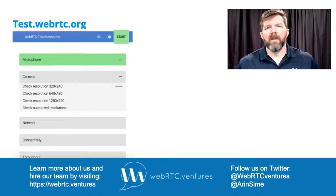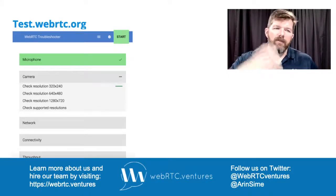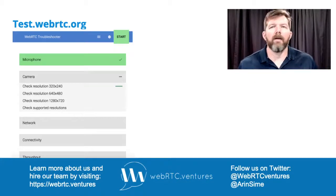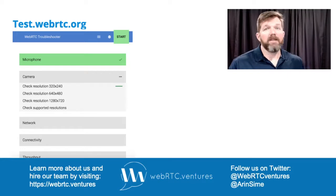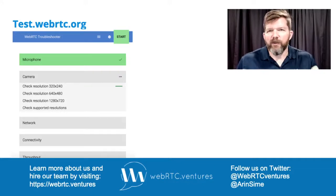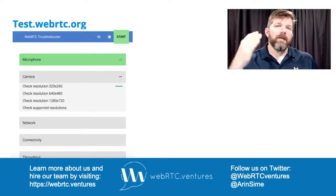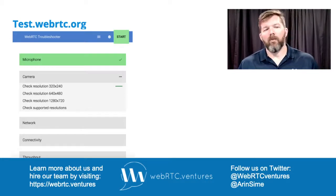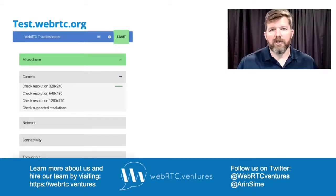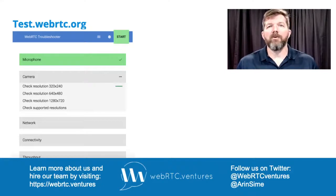You could also go to a site like test.webrtc.org, which has a WebRTC Troubleshooter. This is something you could use in a customer service scenario — if someone says 'I never connect to your calls, I don't understand why,' a customer service agent might send them to this site or a page you make like this on your own site. This test checks your microphone, your camera, different resolutions, your network, and your connectivity throughput. It takes a little time to run through all these checks but it's very comprehensive, and you could look at this implementation as an example of how to implement parts of it into your own application.